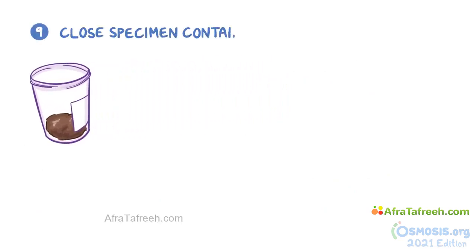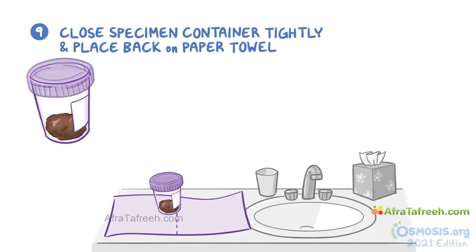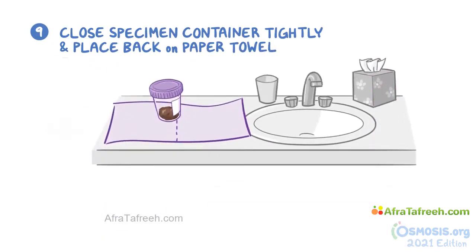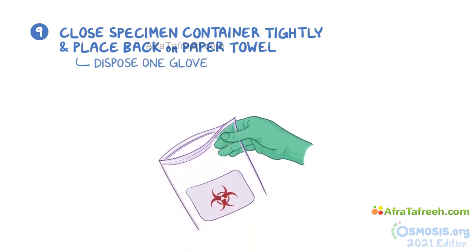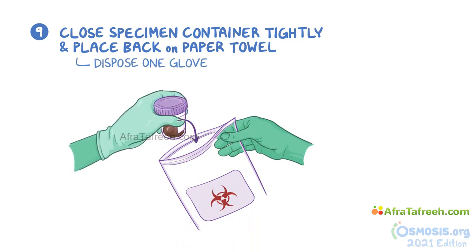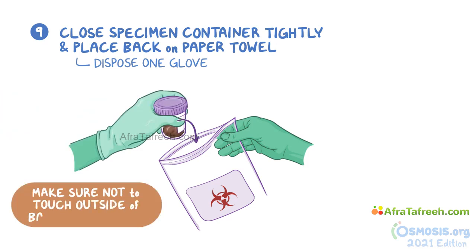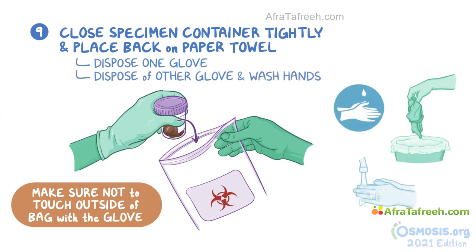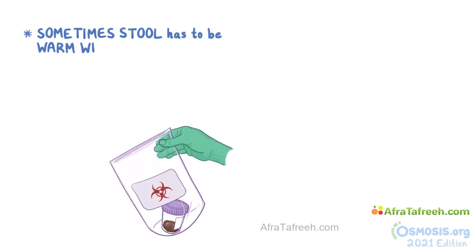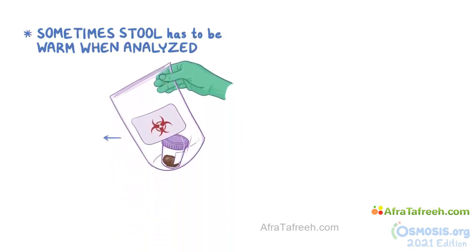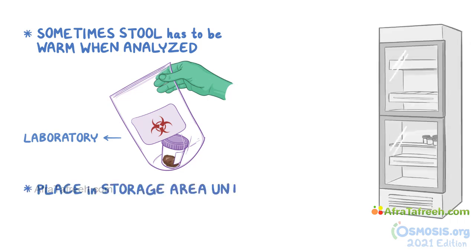Close the specimen container tightly and place it back on the paper towel on the bathroom counter. Dispose of one glove and use the ungloved hand to hold the transport bag. Then, with your gloved hand, put the specimen container into the bag. Make sure not to touch the outside of the transport bag with the glove. Dispose of the other glove safely and wash your hands. Sometimes the stool has to be warm when analyzed, so it must be delivered to the laboratory right away. Otherwise, place it in the storage area until it's picked up.